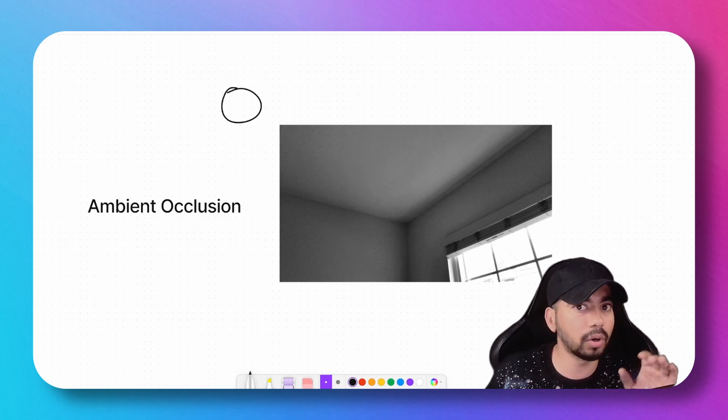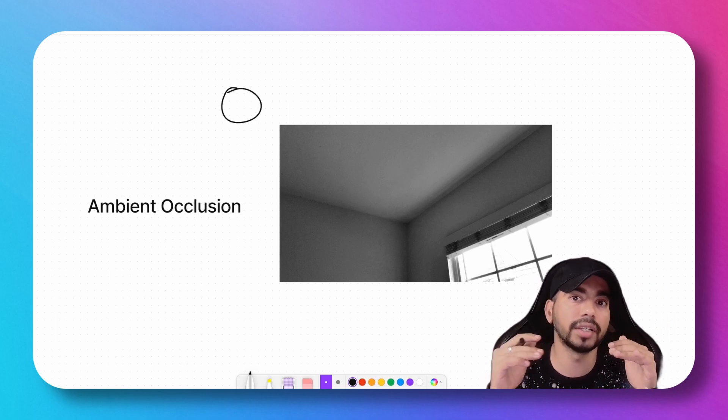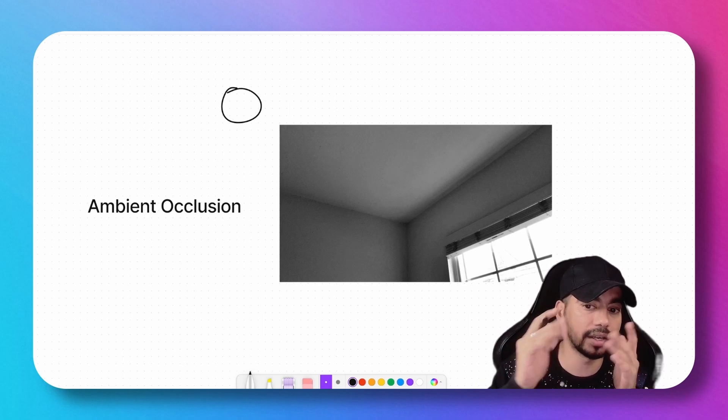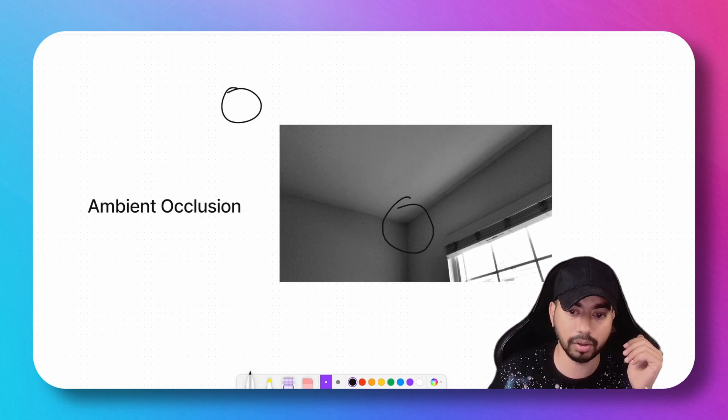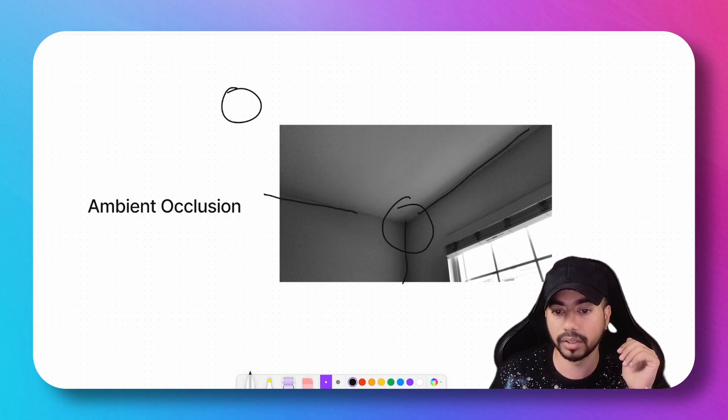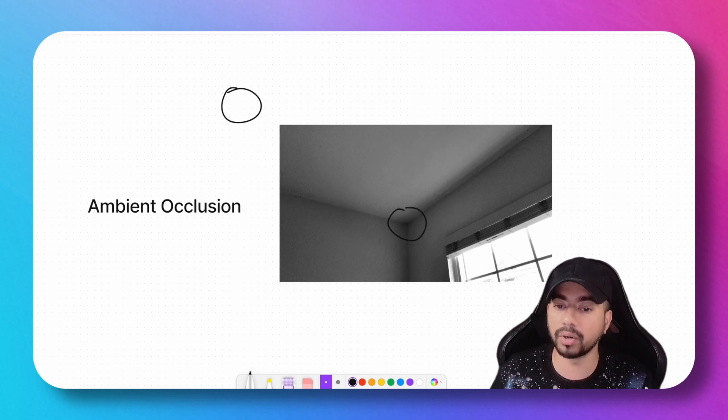...and if you observe the corners of the room—the corners where the walls and ceiling connect to each other—if you observe this corner and these edges where the walls meet, you would observe that the lighting on this particular spot is darker than the rest of the scene. So in order...